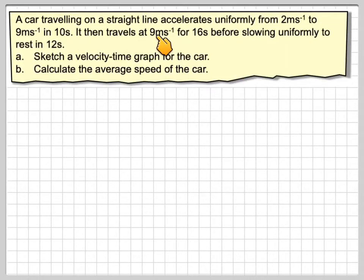A car is travelling on a straight line. It accelerates uniformly from 2 metres per second to 9 metres per second in 10 seconds. It then travels at 9 metres per second for 16 seconds before slowing uniformly to rest in 12 seconds.